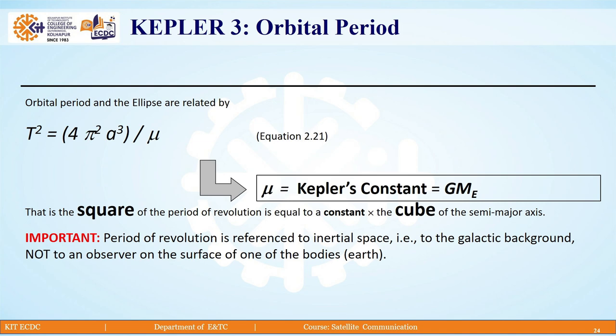Kepler's third law is related to orbital period. According to Kepler's third law, also known as the law of periods, the square of the time period of any satellite is proportional to the cube of the semi-major axis of its elliptical orbit.